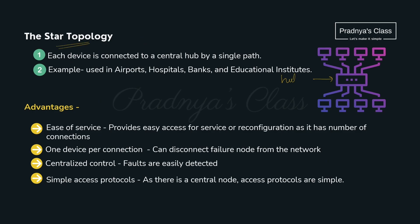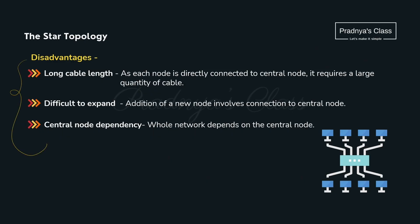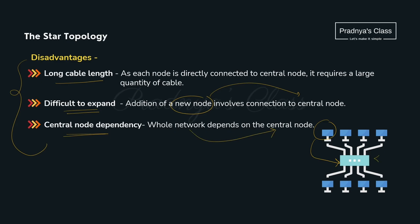There are three topologies: star, bus, and tree. In star topology, there is one central hub and all devices connect to that hub. Advantages: ease of service, easy to reconfigure, one device per connection — so if a node fails it doesn't affect the network and can be disconnected anytime. As it has centralized control, faults can be easily detected, and protocols are simple. Disadvantages: long cables are needed since all devices connect directly to the central hub; difficult to expand; and if the central node fails, the whole network shuts down.